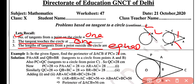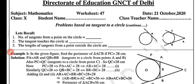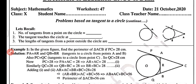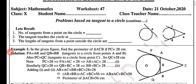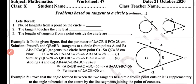Example number one: in the given figure, find the perimeter of triangle ABC, given that PC equals 28 centimeters. We are given the length of tangent PC. Now CP equals CQ, so CQ will also equal 28 centimeters.